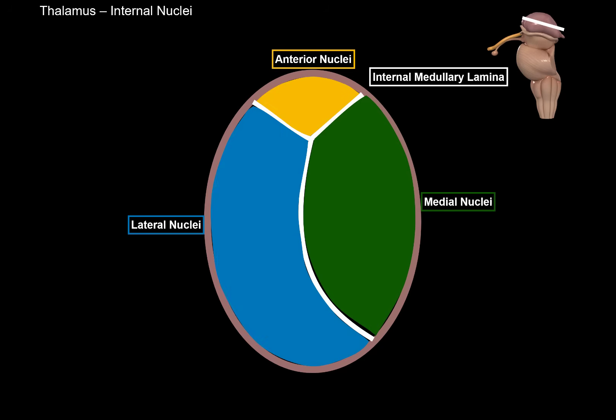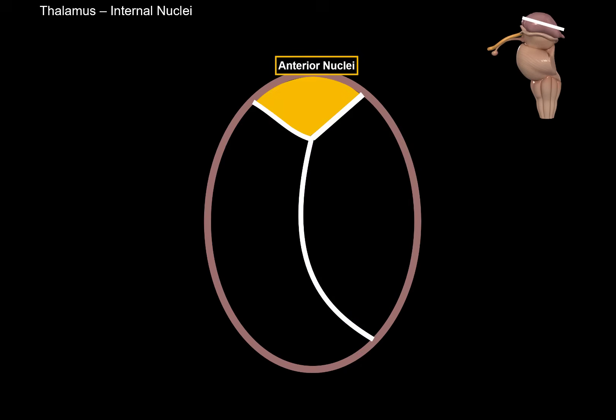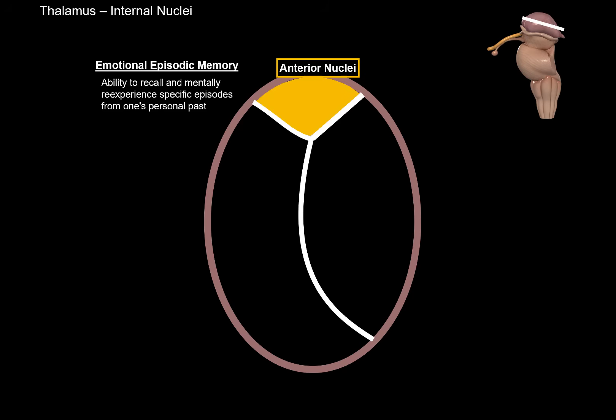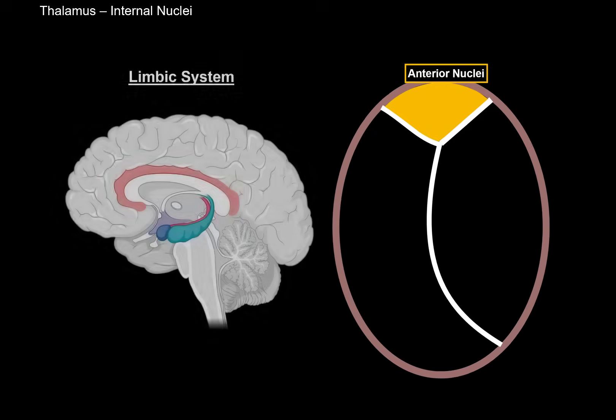The anterior nuclei are part of a circuit responsible for emotional episodic memory — the ability to recall and mentally re-experience specific episodes from one's personal past. This is the one that keeps you awake at night when your brain wanders to awkward situations. It can do that because it's part of the limbic system, which is responsible for control of emotions, behavior, motivation, and memory.